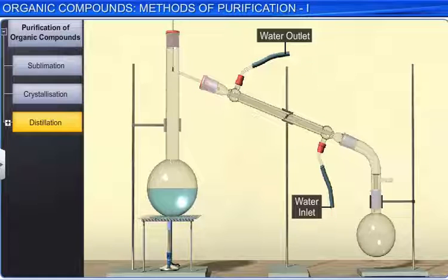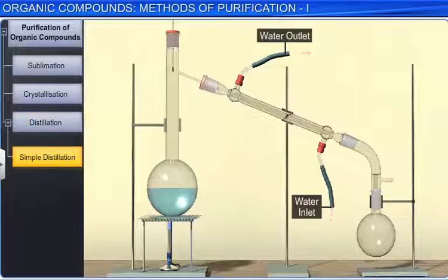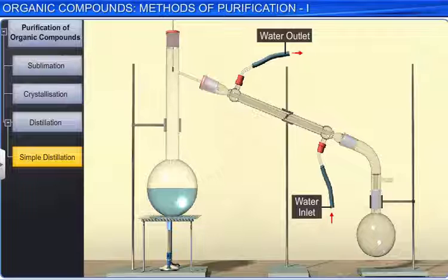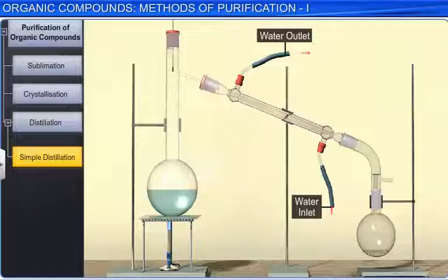Now let's look at the distillation process. This method is used for separating volatile liquids from non-volatile impurities and also to separate liquids which differ in their boiling points. Simple distillation is used when the liquids in the mixture differ appreciably in their boiling points. For example, a mixture of chloroform and aniline, which differ in their boiling point by 123 degrees Celsius, are separated by this technique.